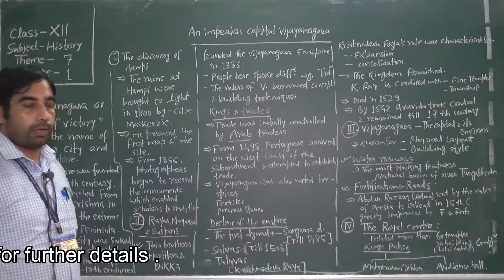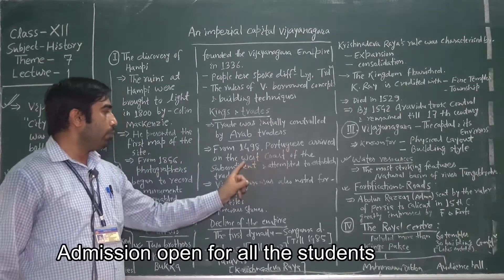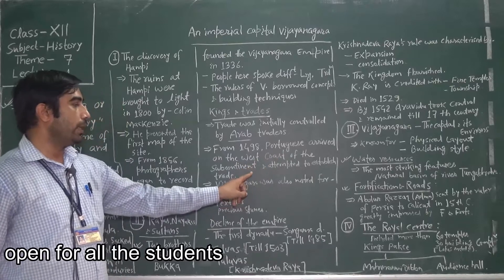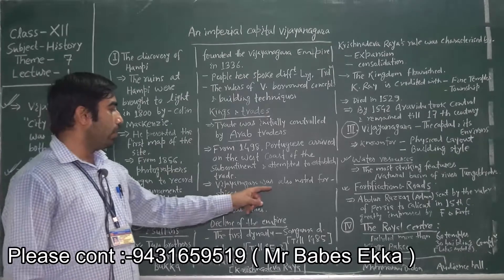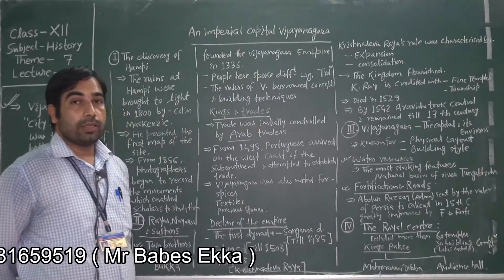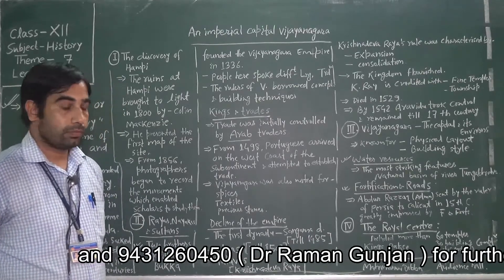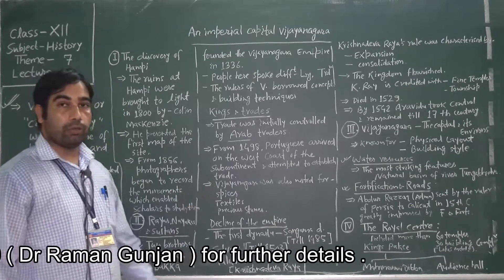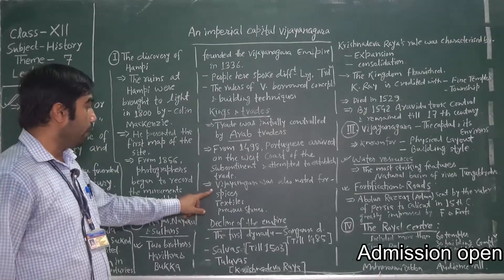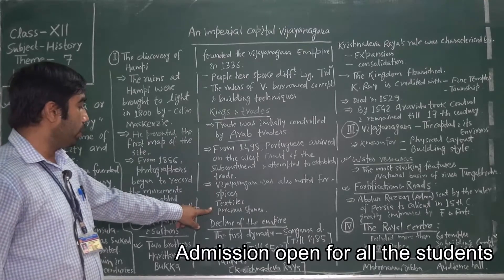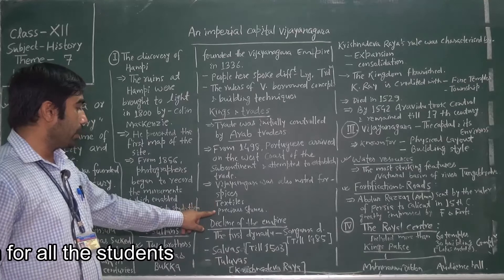Trade was initially controlled by Arab traders. But from 1498, the Portuguese arrived on the west coast of the subcontinent and attempted to establish trade. Vijayanagara was also noted for spices, textiles, and precious stones. All these were the reason behind the peace and prosperity in the empire.